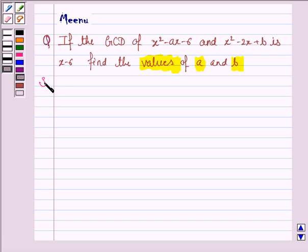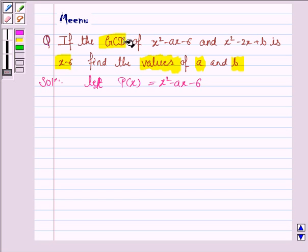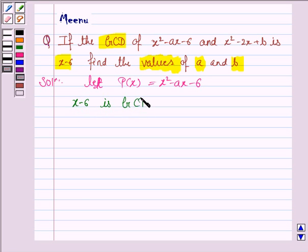So, let's now move on to the solution and let P(x) be equal to x squared minus ax minus 6. Now, we are given that x minus 6 is the GCD of the polynomial P(x). GCD means greatest common divisor of P(x).